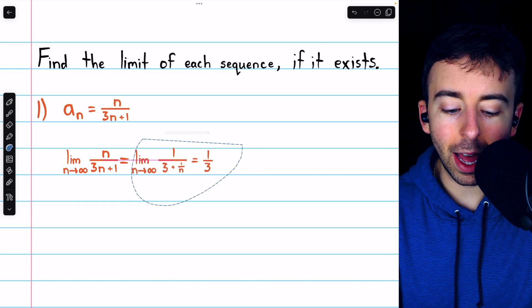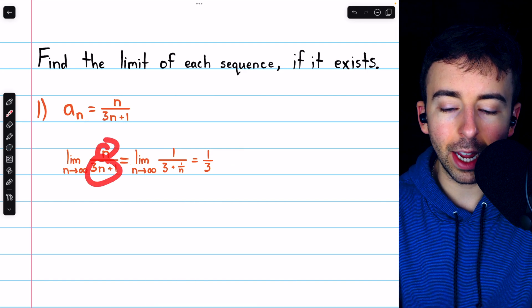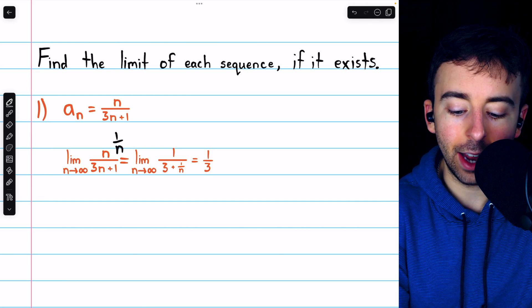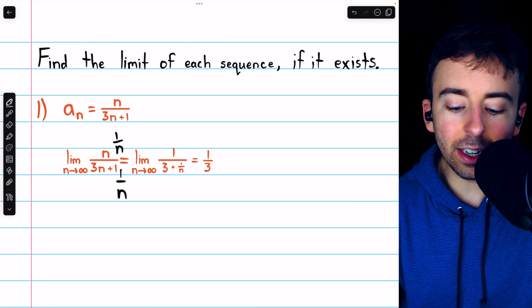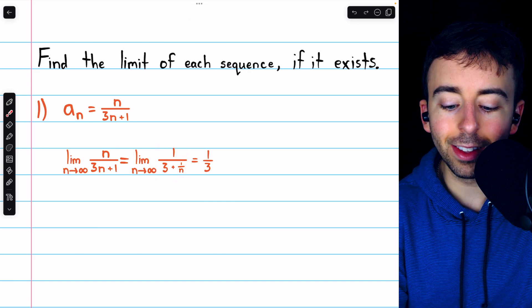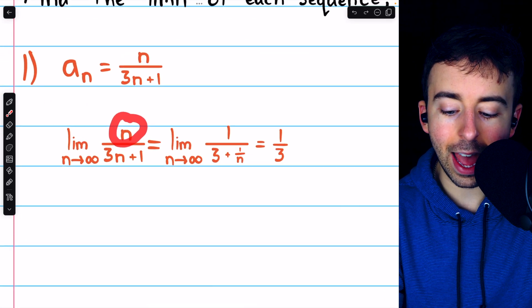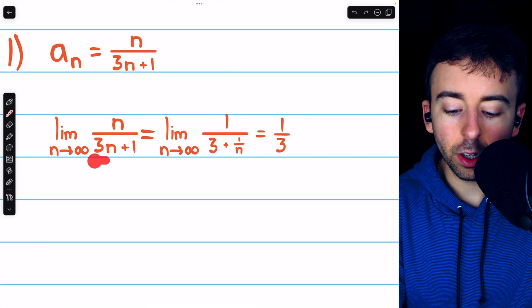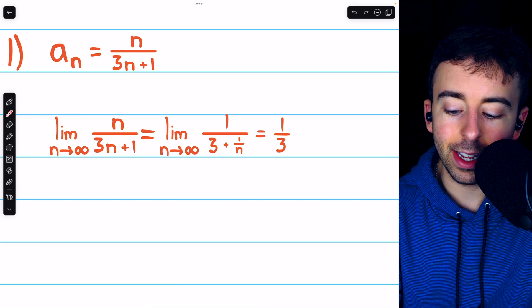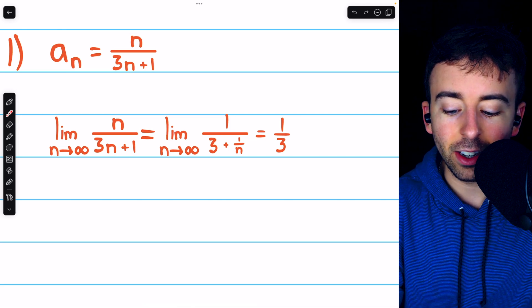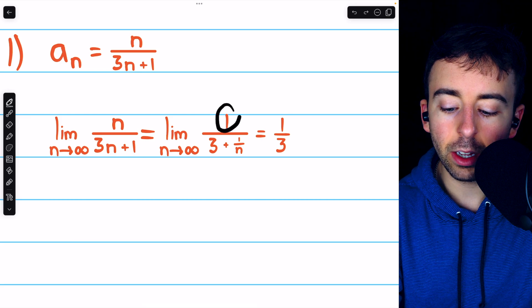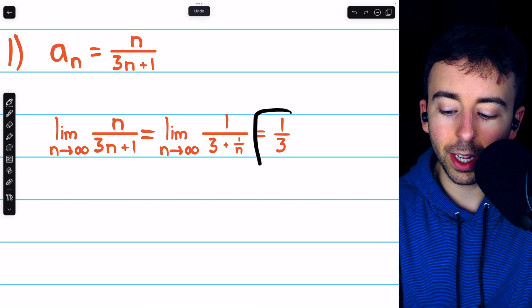We can show that formally by dividing both the numerator and denominator by that highest power of n. If we divide the numerator by n, which is the highest power, and we divide the denominator by n, the highest power, what we get is this. In the numerator, n divided by n is 1. In the denominator, 3n divided by n is 3, and 1 divided by n is 1 over n. Then as n goes to infinity, 1 over n will go to 0, and thus we'll be left only with 1 over 3. So the limit is 1 third.